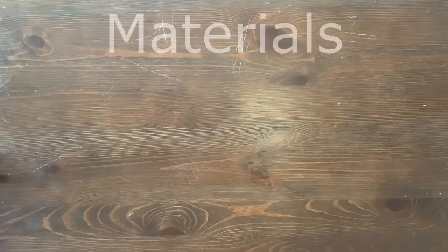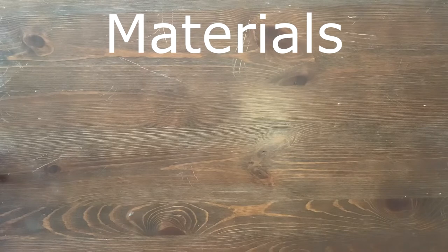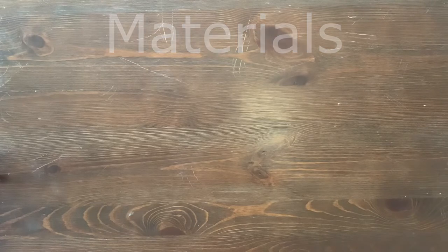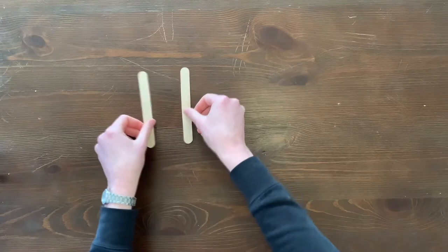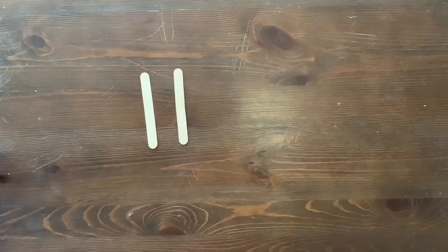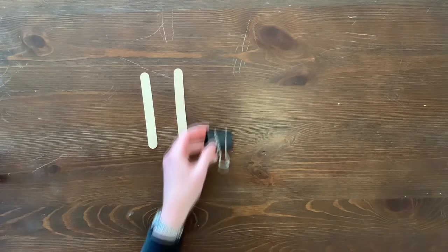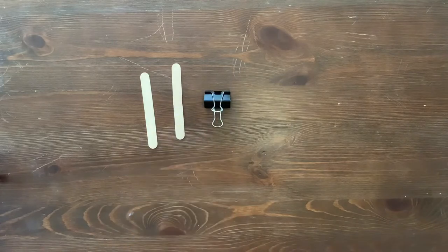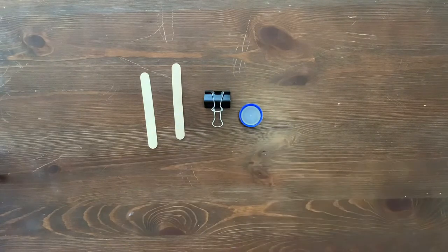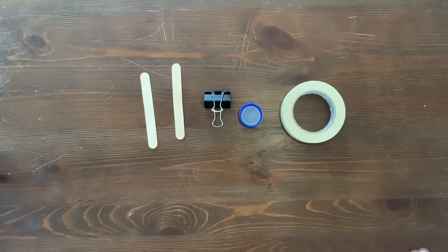Alright boys and girls, now we're going to talk about the materials needed in order to build this project. So go ahead and grab two popsicle sticks or jumbo craft sticks, and go ahead and get a binder clip, then a bottle cap, some masking tape, and aluminum foil.